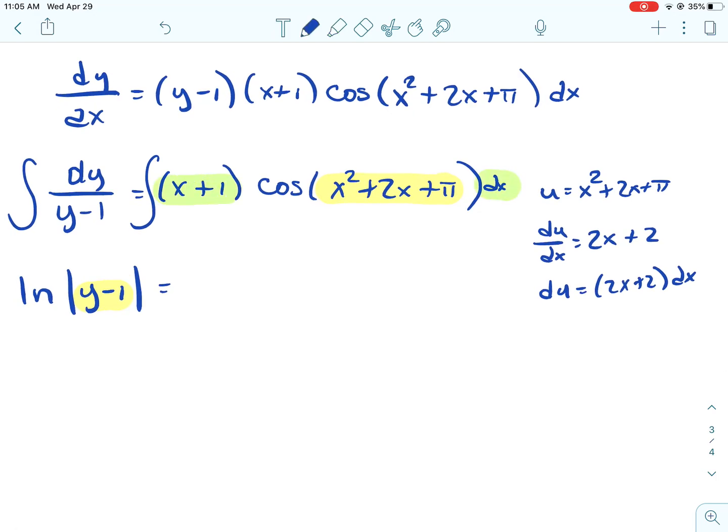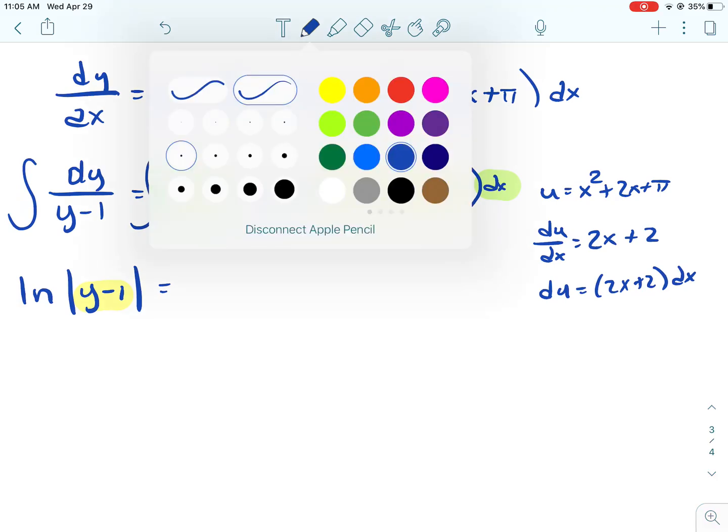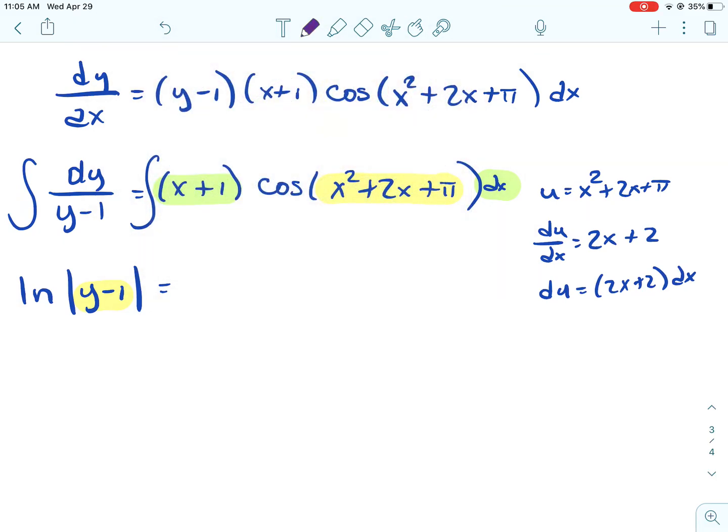And then hopefully you start understanding where this (x + 1) is coming into play. So go ahead and solve that for du. So now for du, I need (2x + 2)dx. And what I have is (x + 1)dx. So I need to multiply (x + 1) times 2, but then I have to do the 1/2 in the front.